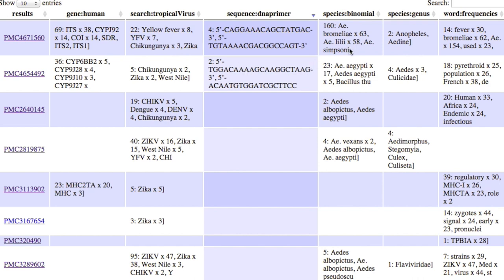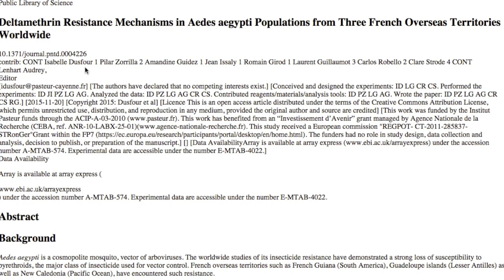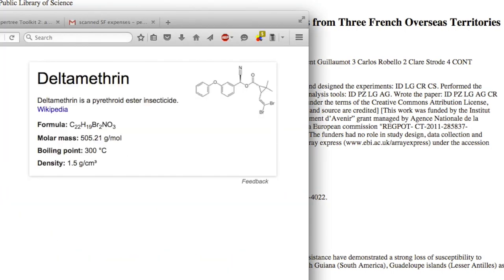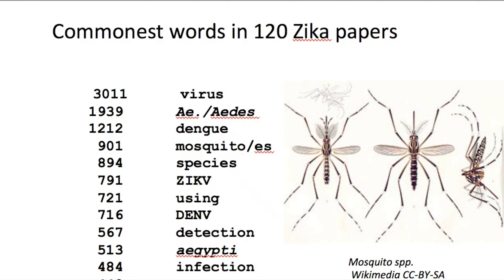Here we've got species which are primarily mosquitoes and other vectors, and here we've got the commonest words. This paper is about infectious diseases and endemics, whereas this one's about pyrethroids, which are insecticides. If we have a quick look at that, the paper is indeed about pyrethroids, and this is the actual compound that is mentioned. The commonest words in the papers are about mosquitoes, infection, viruses, and all that comes out automatically.